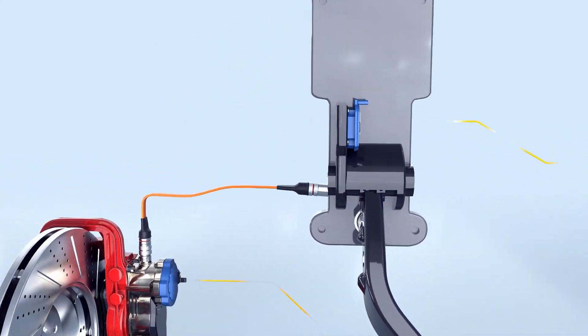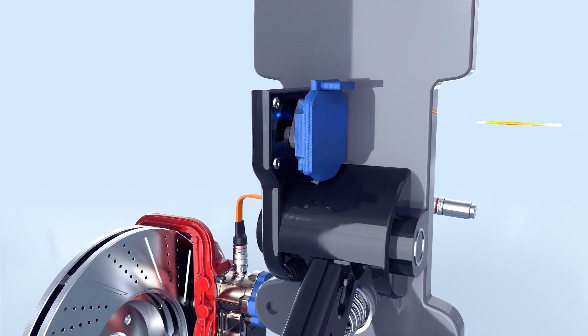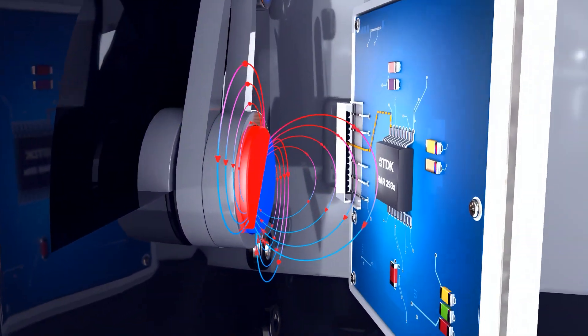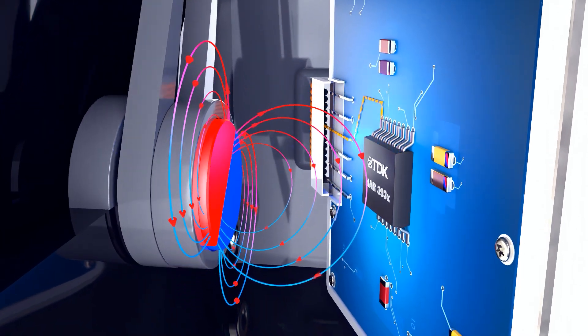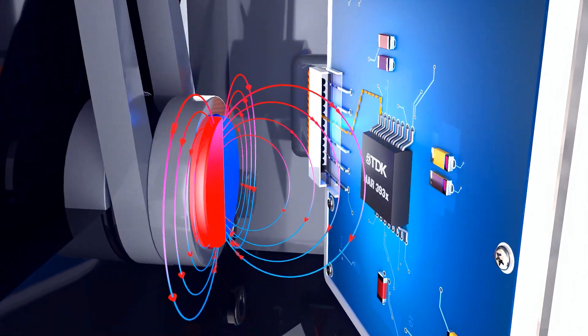3D Hall effect position sensors on the brake pedal, such as the HAR3930 from TDK, measure the driver's input, like the brake pedal position, and help the ECU to determine the desired braking level.